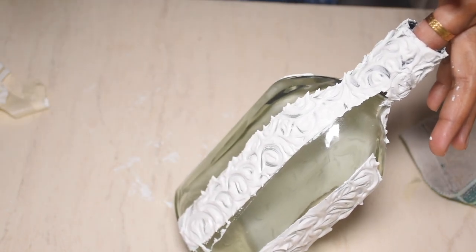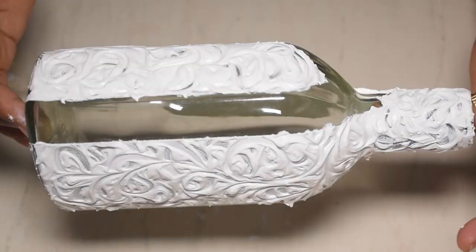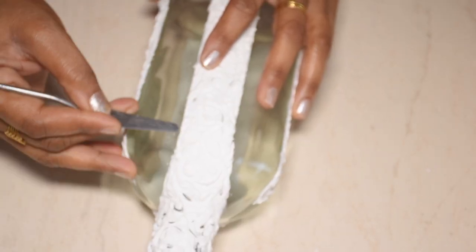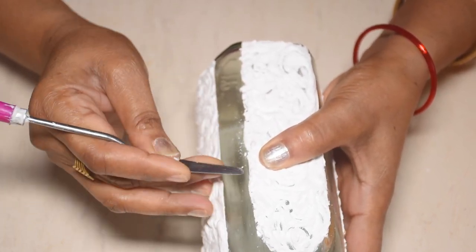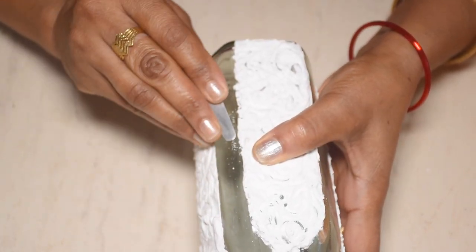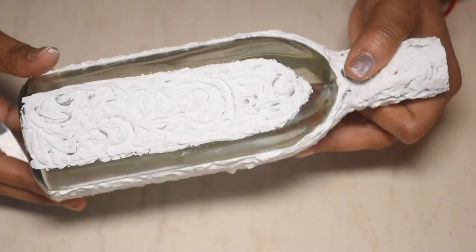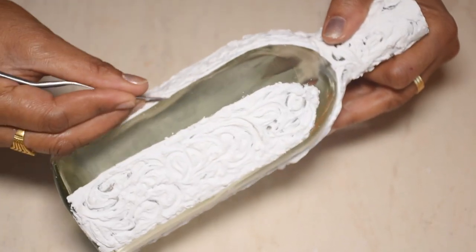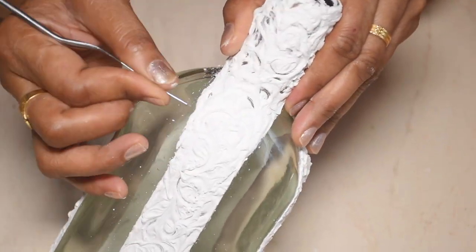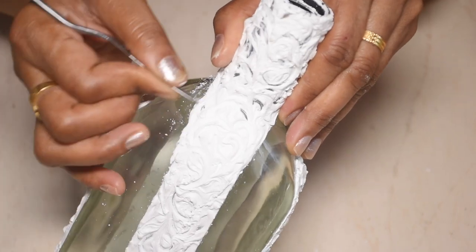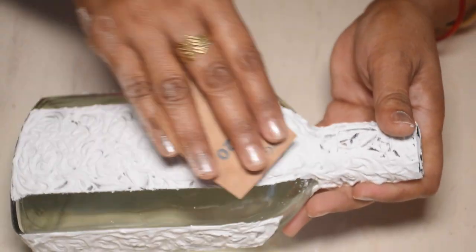After removing the masking tape, we leave it overnight. If the texture is uneven, then clean the bottle. Here we use sandpaper on the texture.